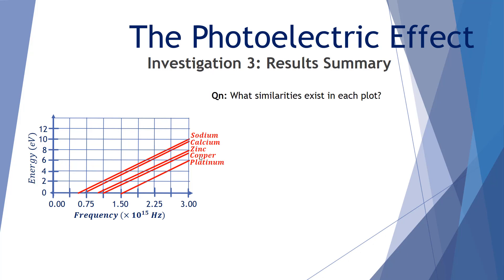First of all, what similarities exist in each plot? You can pause here and consider it and come back in a second. Clearly here all plots have the same gradient. Regardless of the metal cathode, they each have exactly the same rise over run. So the gradient of sodium is the same as the gradient of calcium and that of zinc, copper, and platinum. All the rises over runs are equal, the same ratio.